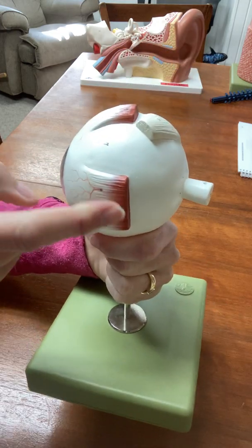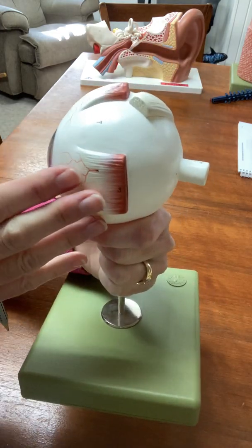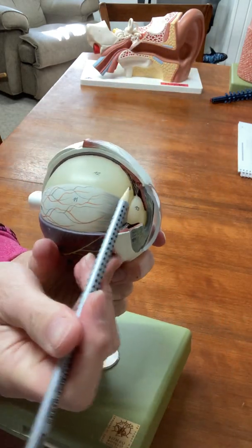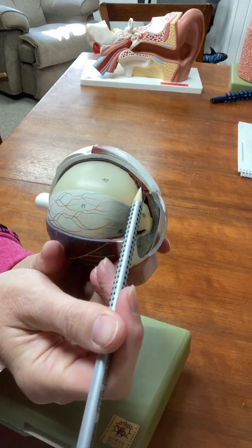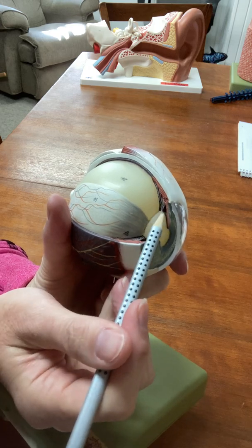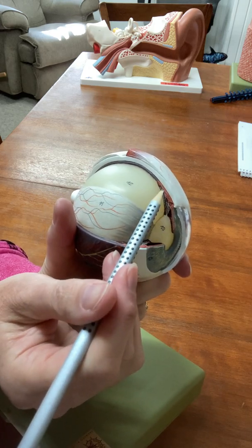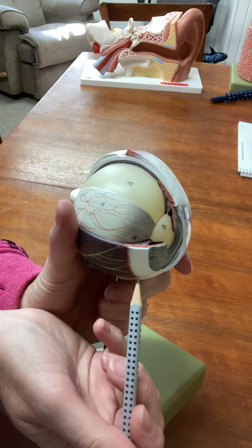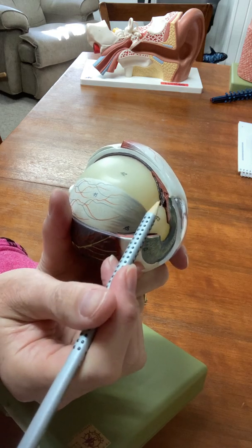Up here these muscles are muscles that move the eye. They're on the outside of the eye, but these muscles are inside the eye and they're smooth muscle. These are skeletal, you can move your eyes on purpose, but these are smooth muscles.